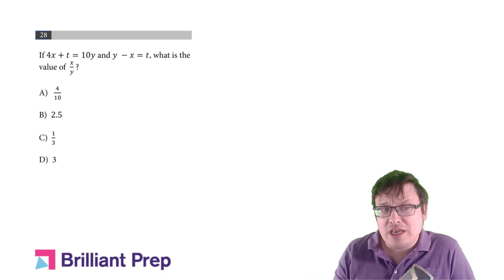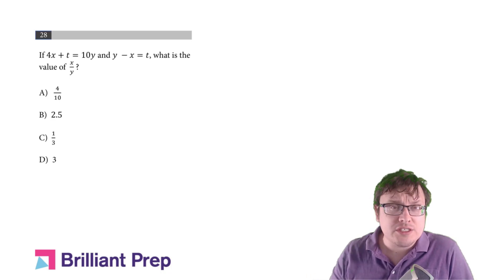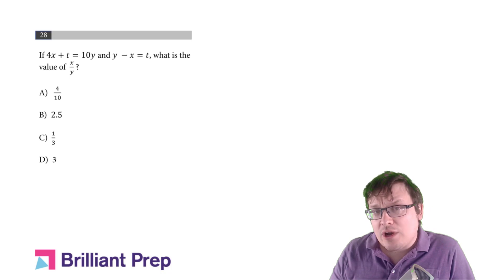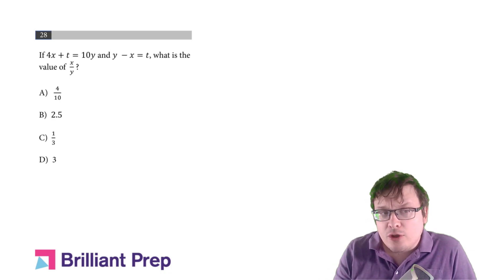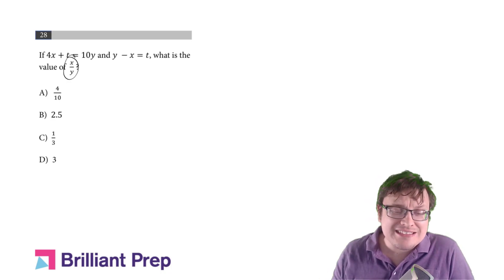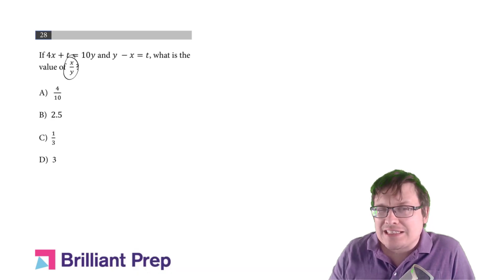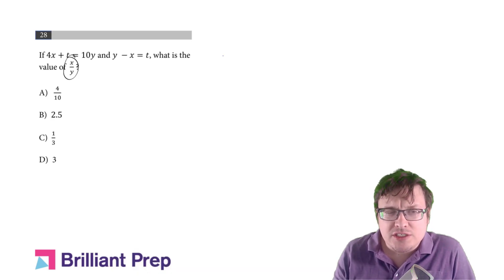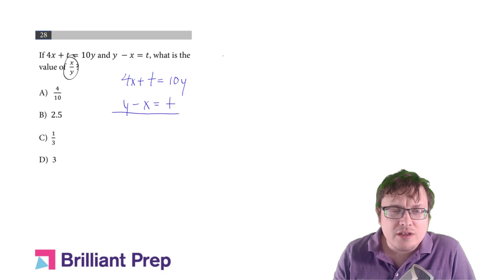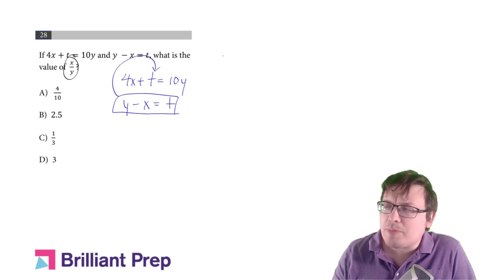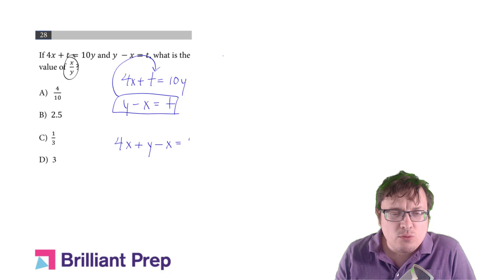you can't because we've got three unknowns and two equations. So we can't get x and y directly, but the question doesn't want that. The question wants x divided by y. So can I get x divided by y? Let's write up my equations here. I've got 4x plus t equals 10y, and then I've got y minus x equals t. I'm tempted to just make a substitution here. Let's pop that in for t. We'll get 4x plus y minus x equals 10y.